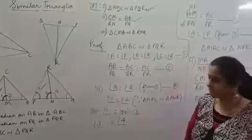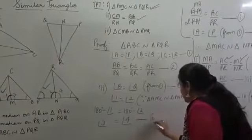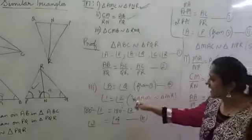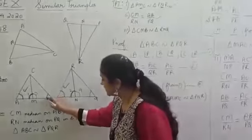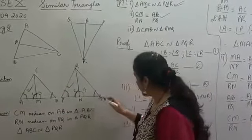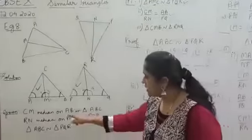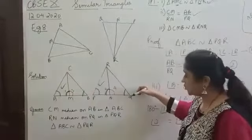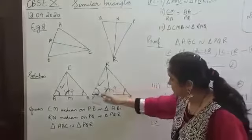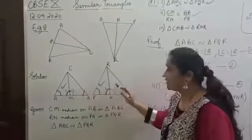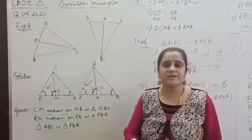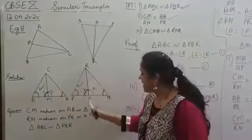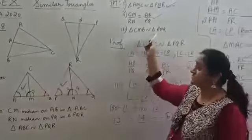This is result B: angle 3 equals angle 4. Now look at results A and B. Result A says angle B equals angle Q, and result B says angle 3 equals angle 4. So in triangle CMB and triangle RMQ, we have angle B equals angle Q, and angle 3 equals angle 4. Therefore, by AA similarity, these two triangles are similar — that is, triangle CMB is similar to triangle RMQ. And that is result 3.